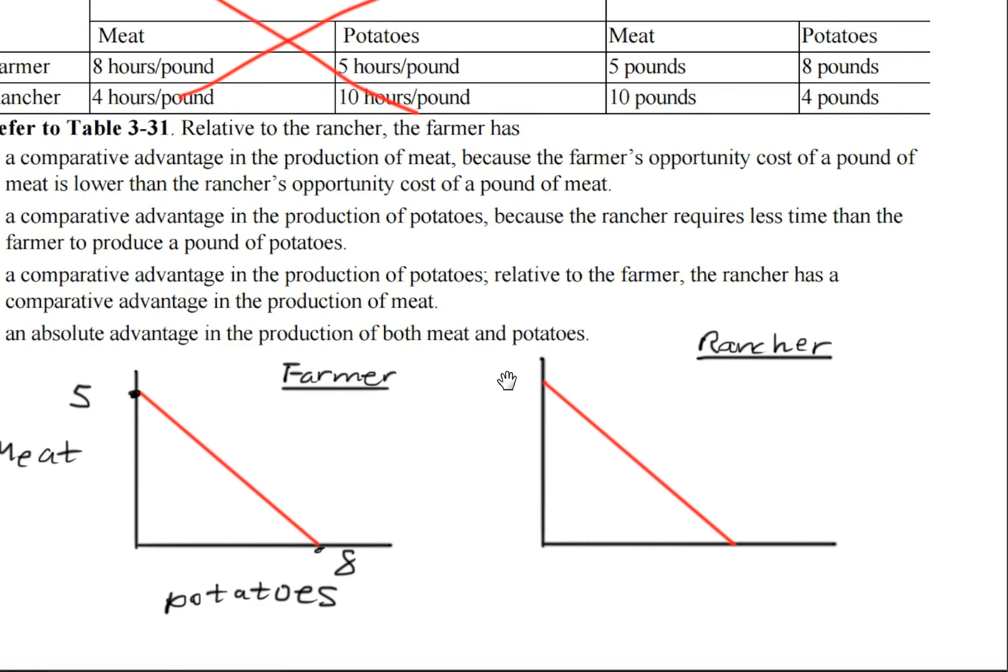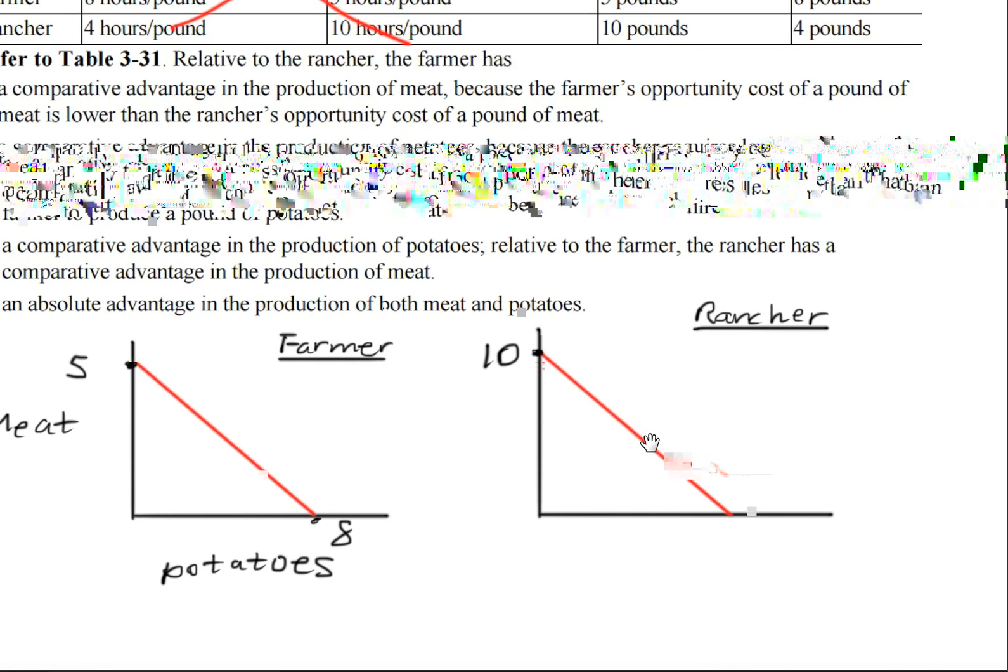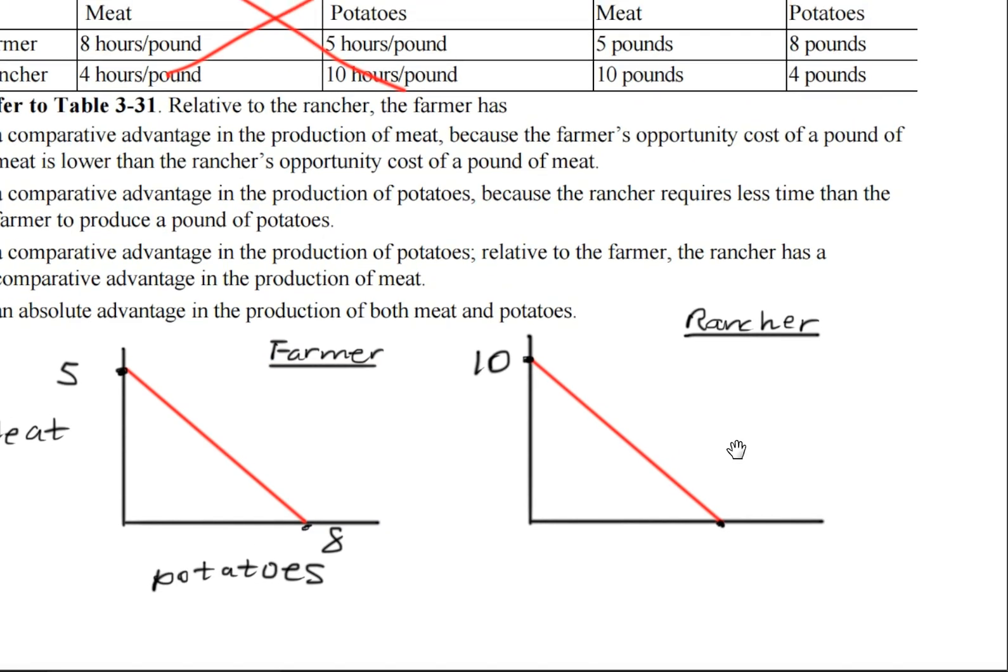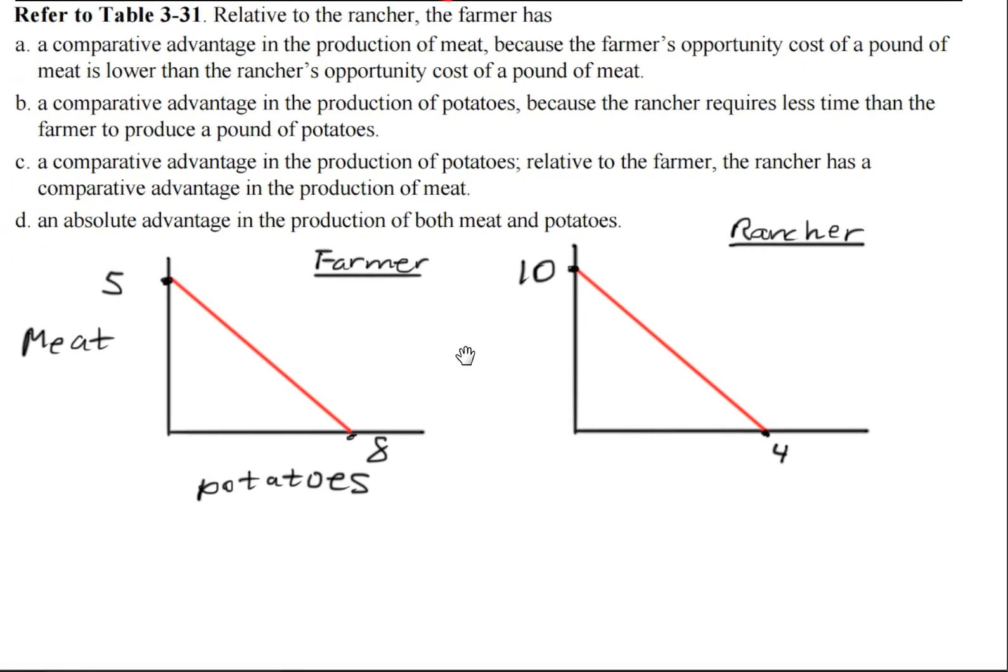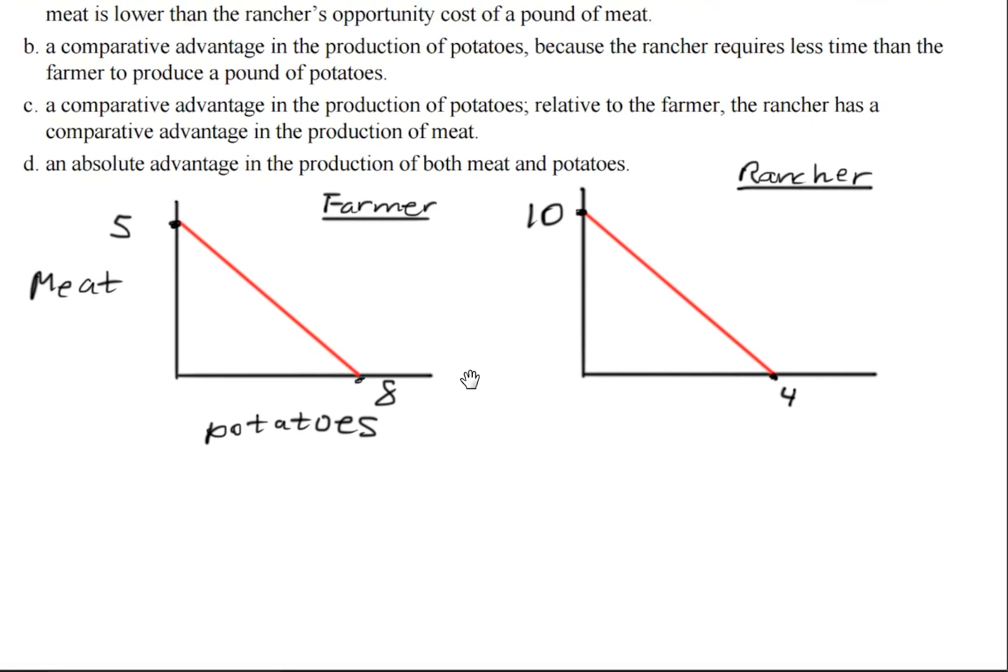And we do the same procedure over here. For the rancher, we'll write 10. And for the potatoes for the rancher, we'll write 4. The next step is to find who has the comparative advantage over what.